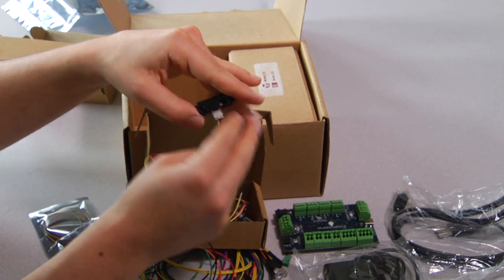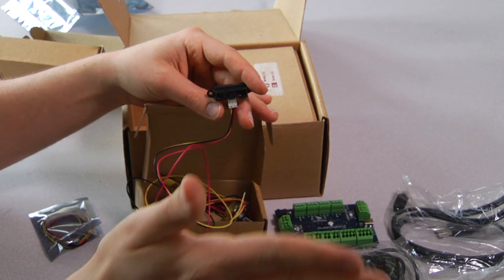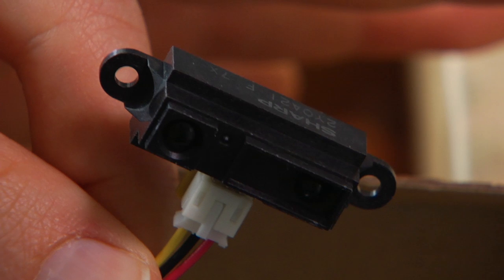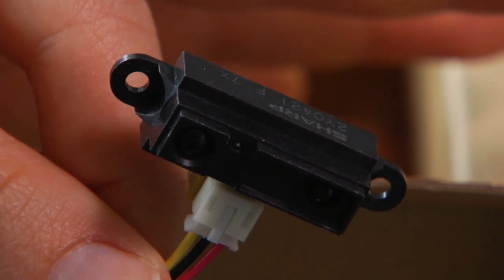The distance sensor will tell you how far away an object is from it in sort of a straight line. And the range is roughly 10 centimeters to 80 centimeters.